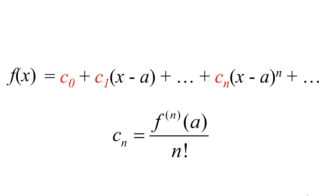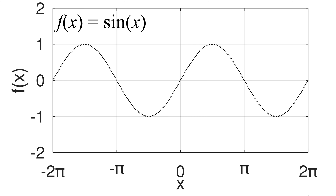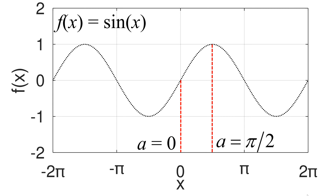To visually explain this math concept, I can use sin(x) as an example with A equal to 0 and A equal to pi over 2. For the Taylor series, the function f(x) must be continuous and infinitely differentiable, and sin(x) meets this criteria. In this plot, sin(x) is shown between minus 2pi and 2pi, and I will show you the difference between the Taylor series at A equal to 0 and A equal to pi over 2 to explain the meaning of A.